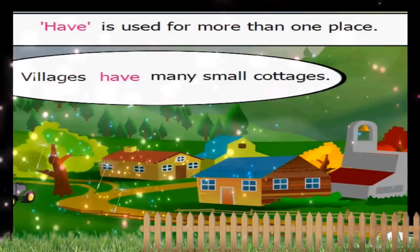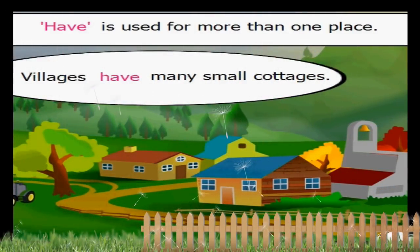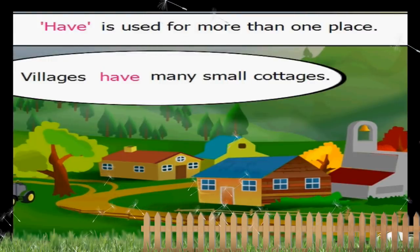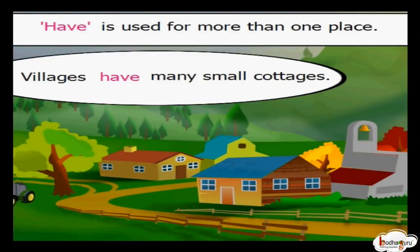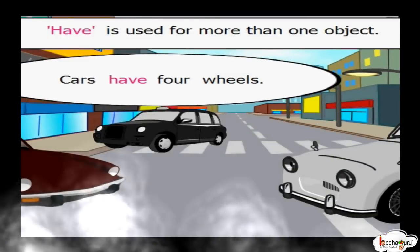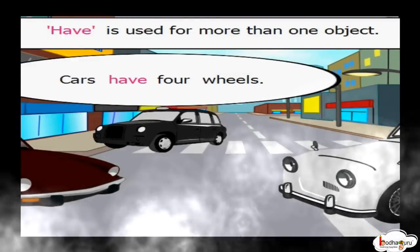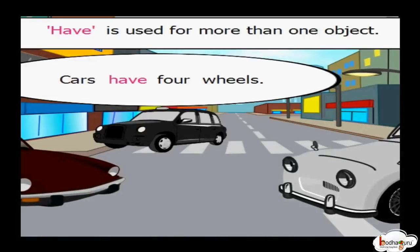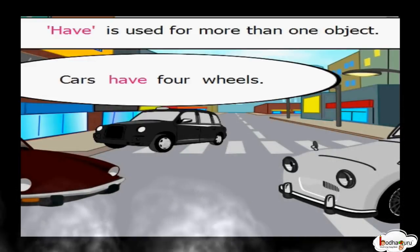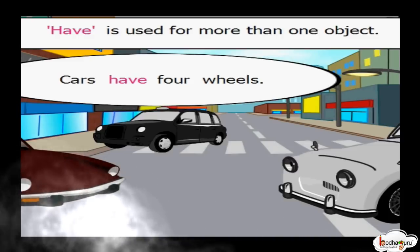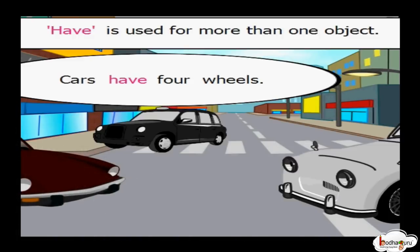So, when we are talking about many persons, or many animals, or many places, or many things, we use 'have'. Cars have four wheels. 'Cars' is a plural form — we are talking about more than one car. When we talk about more than one object, we use 'have'.